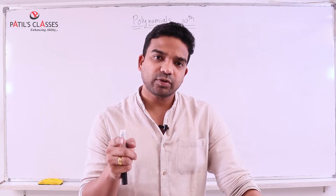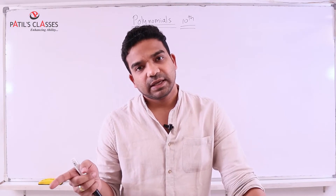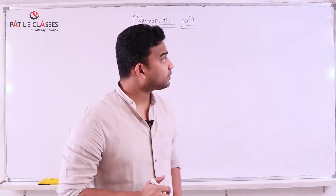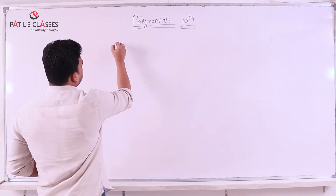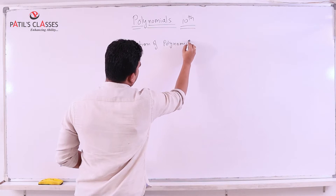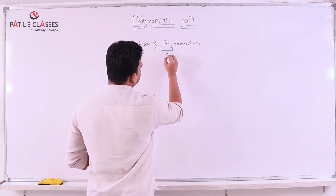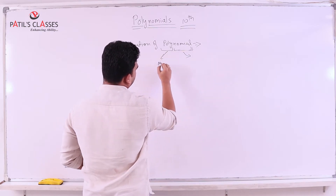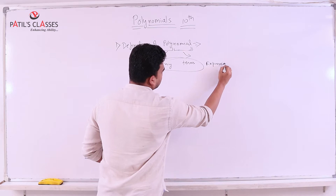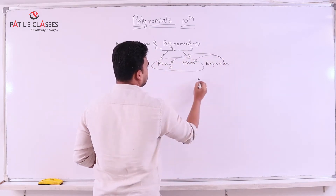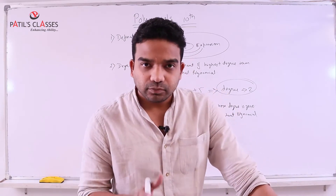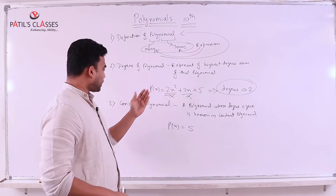We are also going to see the relation between the roots of the polynomial and the coefficients of x², x, and the constant term. So let us start with polynomials. First is the definition of polynomial — poly means many and nominal means terms. Then we will go to the degree of polynomial and what is constant polynomial.